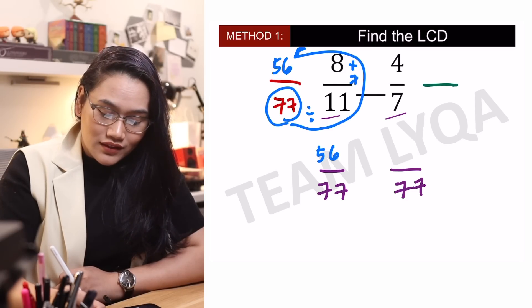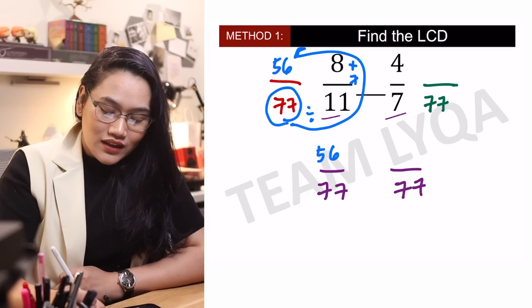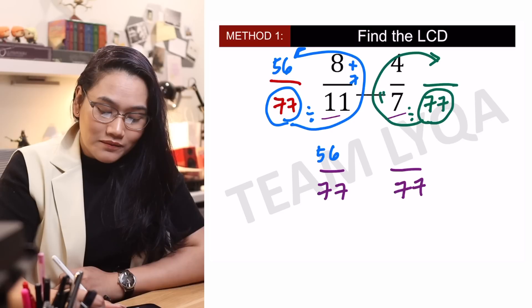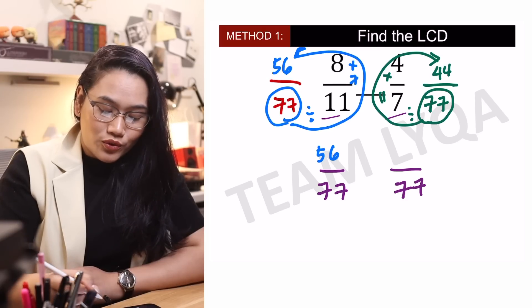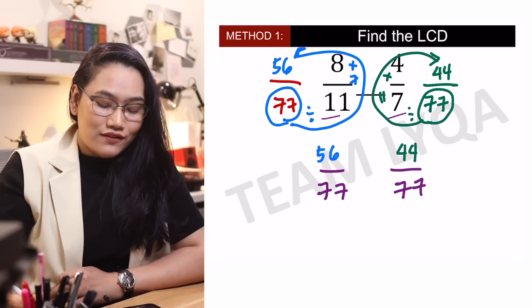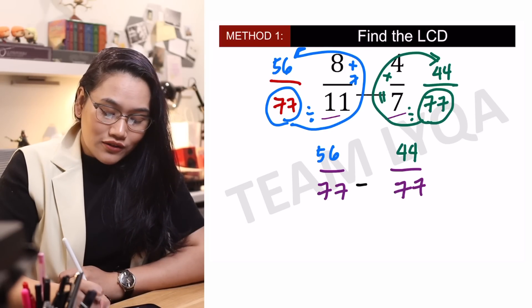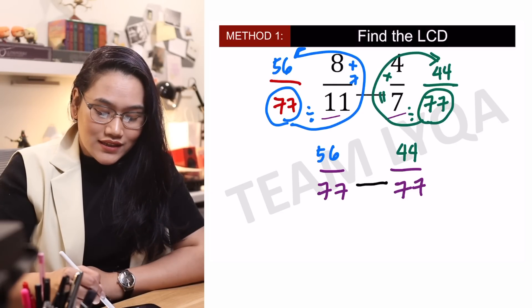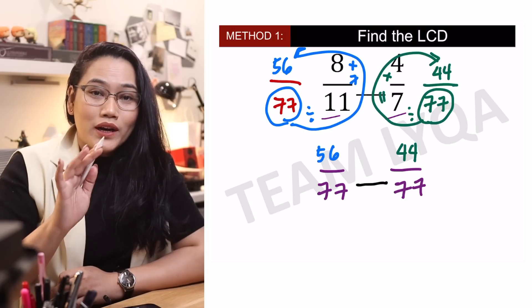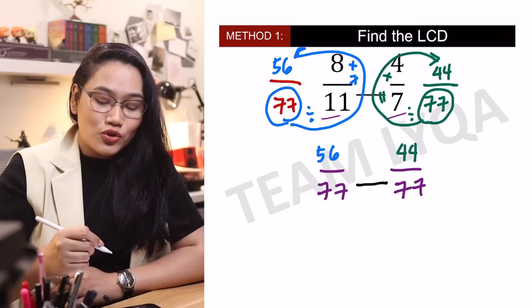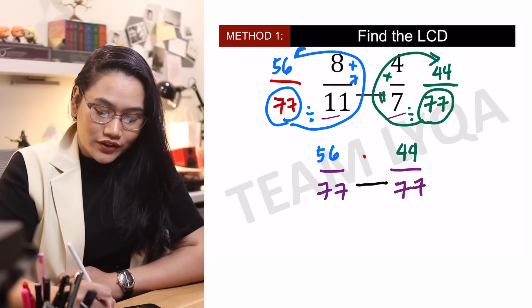Same thing gagawin natin dito sa 7. Kung gusto natin siya maging over 77, ikotin lang natin siya. 77 divided by 7 is 11, times 4 — which is going to give us 44. So ibig sabihin nun, ang 4 over 7 ay 44 over 77. Now that we have that, madali na ito figure out kung ito ba ay less than or greater than. Dahil kitang-kita na natin kung ano yung mga numbers na nasa itaas. Ang rule kasi, kung pareho sila ng denominator, kung sino ang mas mataas ang numerator ang mas malaking fraction. So ibig sabihin, ang sagot dito ay greater than.